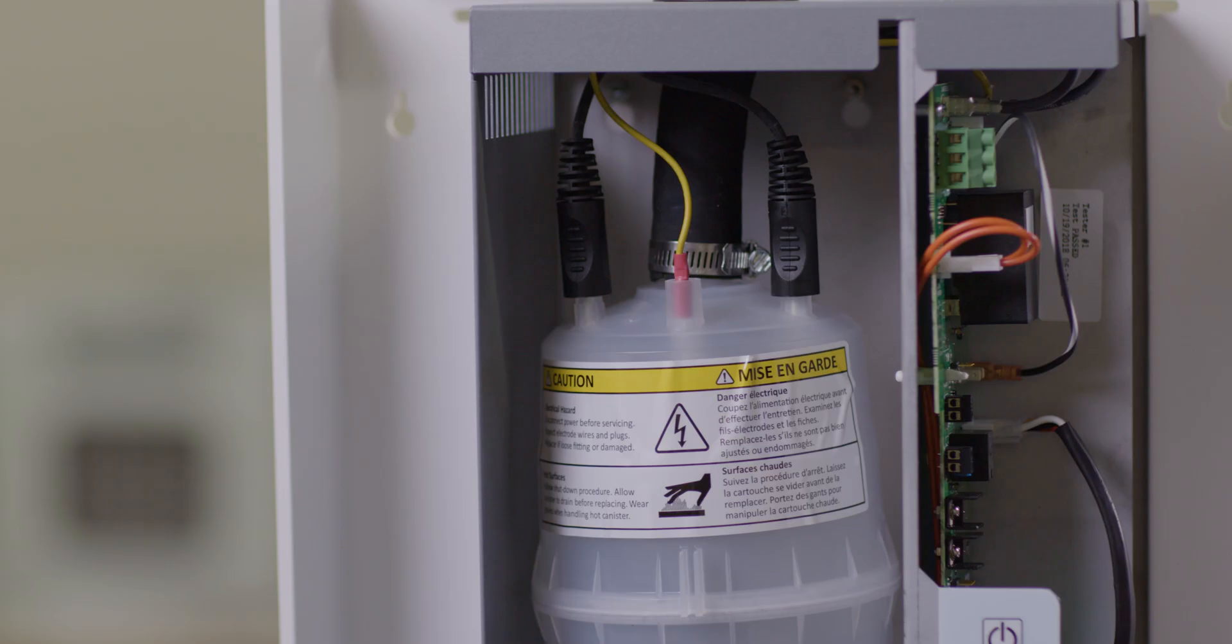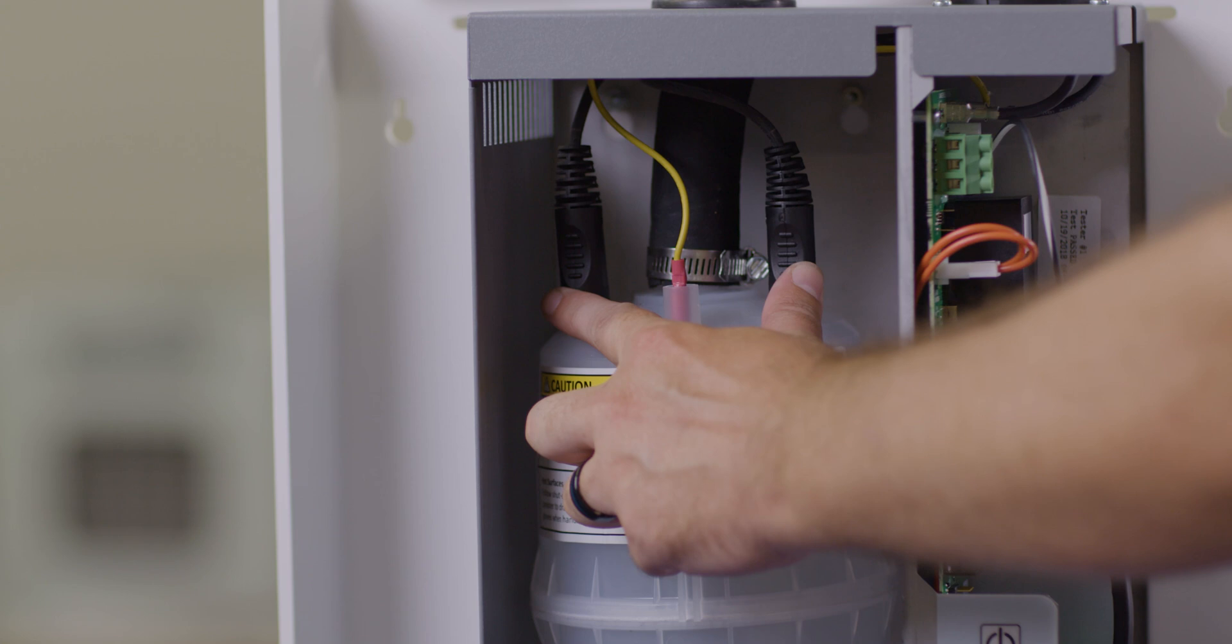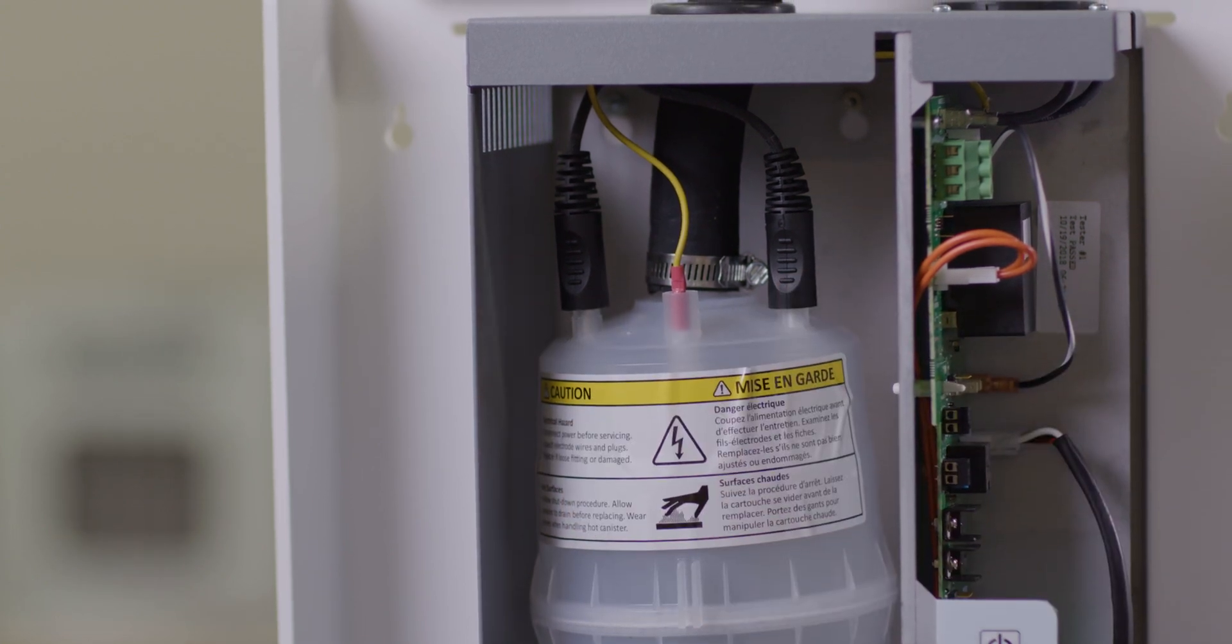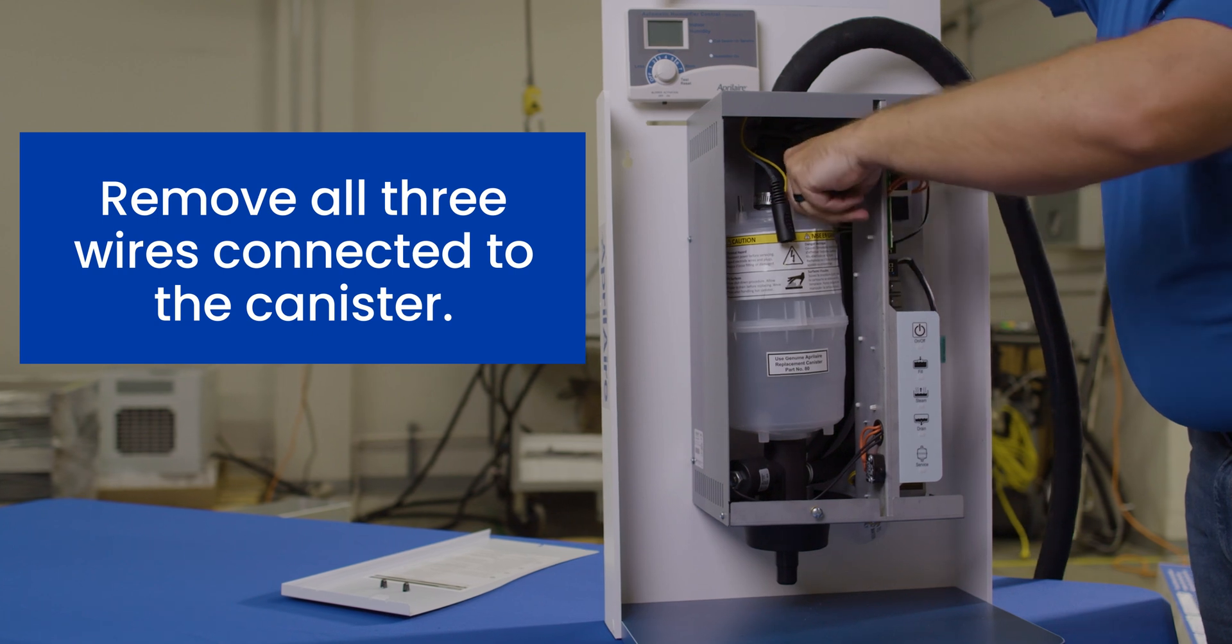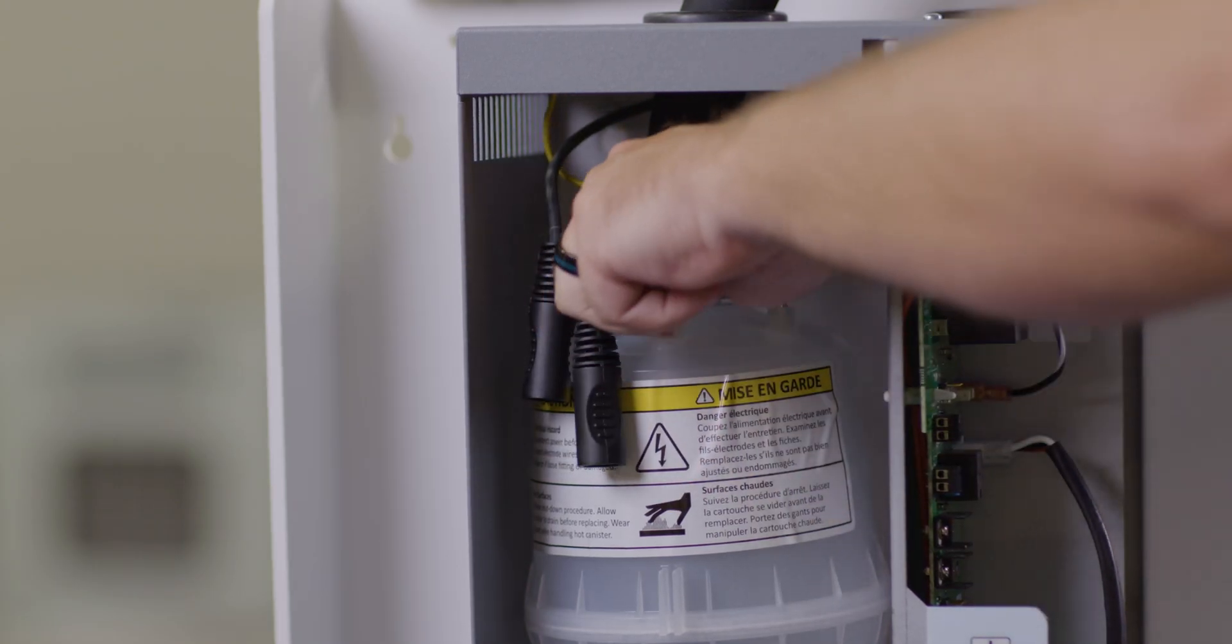On top of the canister, there are two electrode wires with black connectors and a yellow high water pin with a red connector. Pull those off. There's no polarity, so the electrode wires can be reattached to either of the corresponding pins.